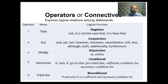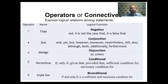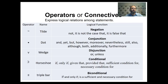The next symbol is the wedge, which stands in for disjunction — words like 'or' or 'unless.' For conditional statements, we use a horseshoe — note the horseshoe always points to the left. It stands in for words like 'if,' 'only if,' 'given that,' 'provided that,' 'sufficient condition for,' and 'necessary condition for.' Finally, we get the biconditional — the triple bar, which is like an equal sign with an extra line. The triple bar stands in for phrases like 'if and only if' or 'is a necessary and sufficient condition for.'